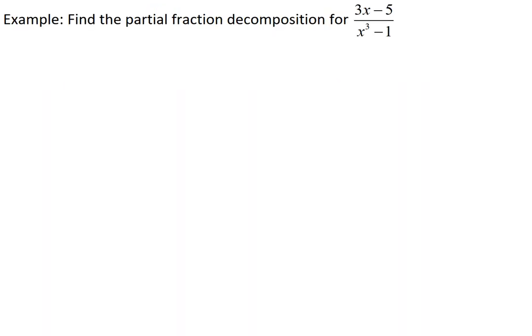Let's try an example where we want to find the partial fraction decomposition for the rational expression with numerator 3x minus 5 and denominator x cubed minus 1. Going through our steps, the degree of the denominator is already larger, so we don't need long division. We'll copy down our expression: numerator 3x minus 5, denominator x cubed minus 1.